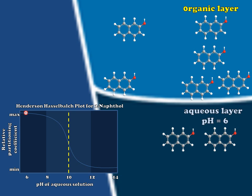Now let's take a look at what happens if instead we change the pH of our aqueous layer to about 10.